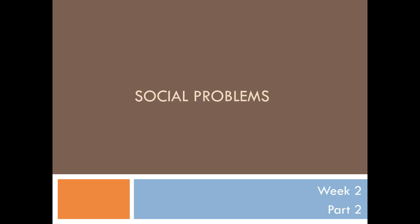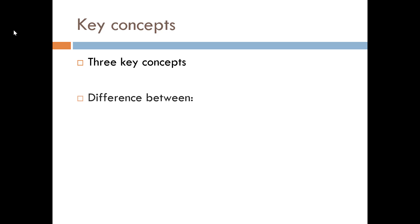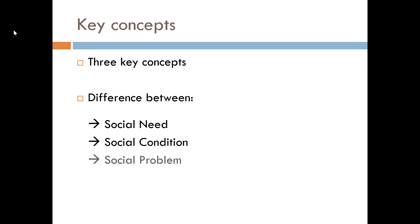Hi everyone and welcome to this presentation that is part two of the three video series that make up week two's required readings. This presentation is going to be about defining social problems. Let's go over some key concepts that can help us understand what exactly a social problem is, specifically the difference between a social need, a social condition, and what makes a social condition become a social problem.